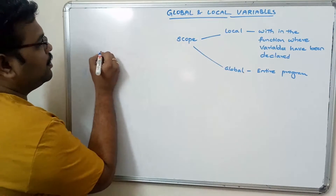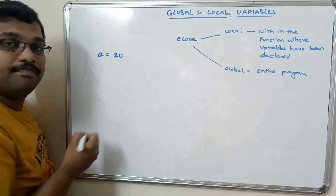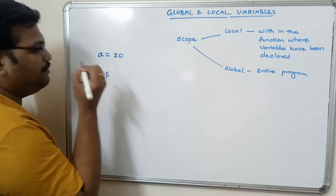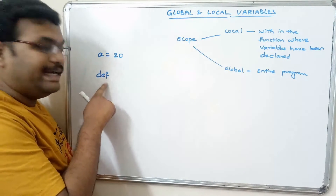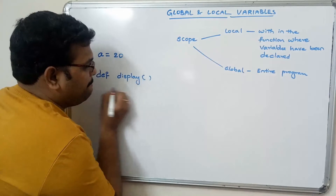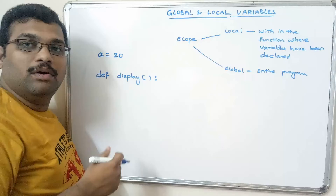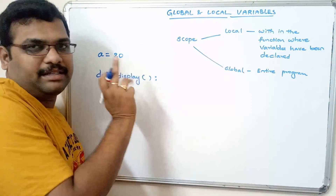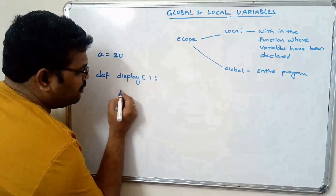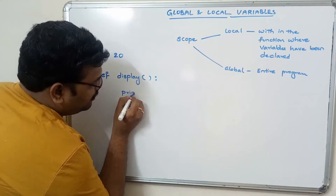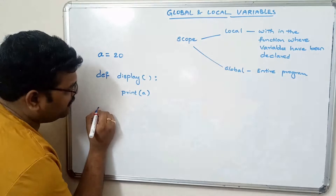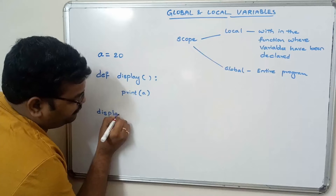Let us take an example. Let a be equal to 20. Every user-defined function should start with the DEF keyword, followed by the function name. There are no curly braces, so we represent a block of statements using indentation by placing a colon after the header. Let us define the function 'display'.